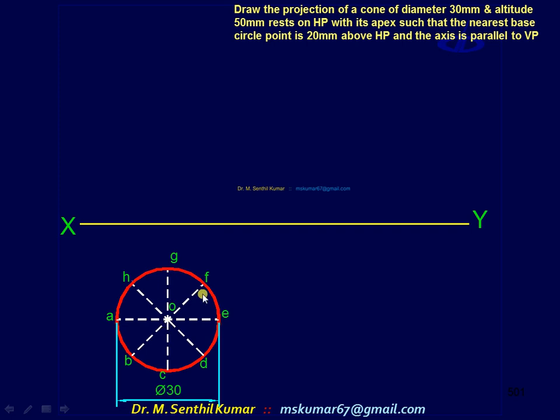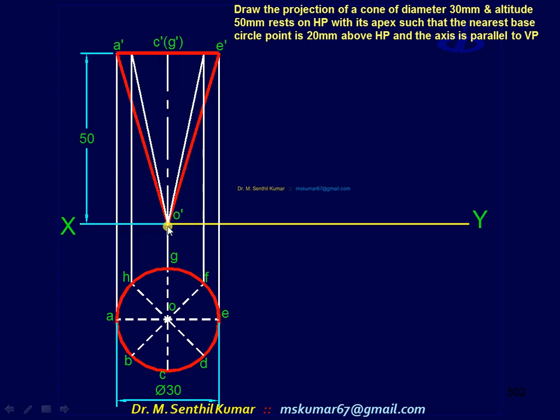You see all the generators are hidden because the apex is on the ground. So these generators are not visible, they are hidden. But don't darken it.